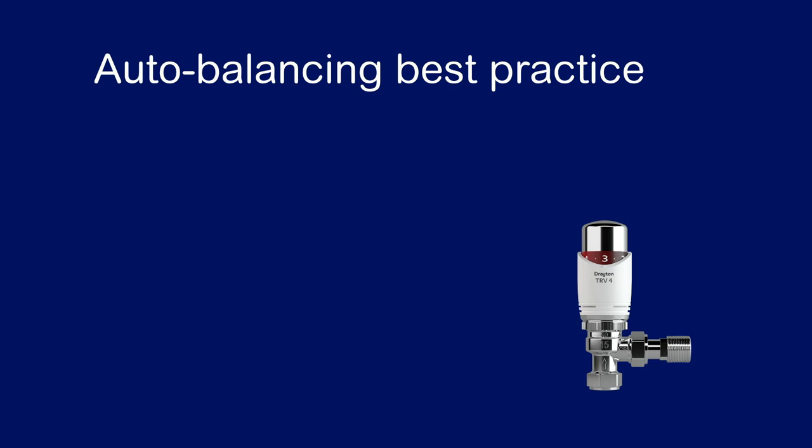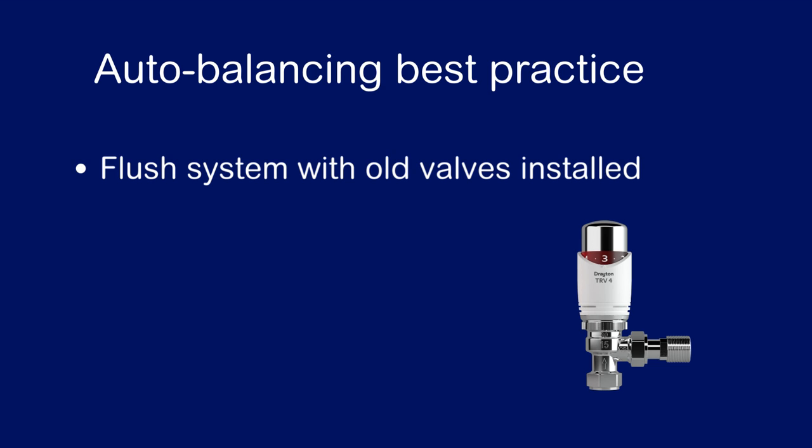Here are some best practice tips when using Drayton's auto-balancing TRVs. Firstly, you need to ensure that the system is clean and free from any debris. It is a good idea to have the system flushed with the old bodies installed and fit the Drayton auto-balancing TRVs afterwards to make sure that the small aperture within the valves is kept clean. Next, you need to make sure the flow follows the flow direction arrow on the body and orientate the head accordingly.